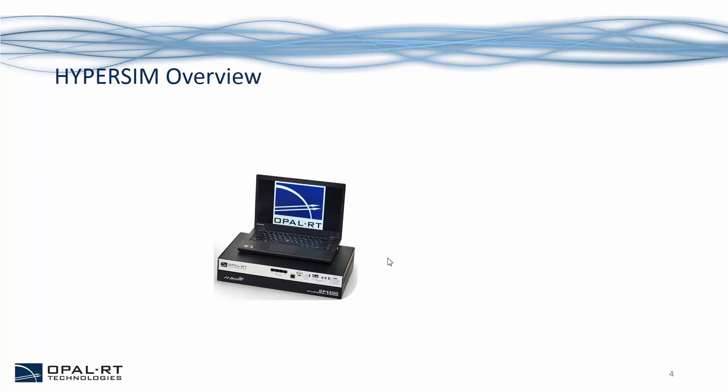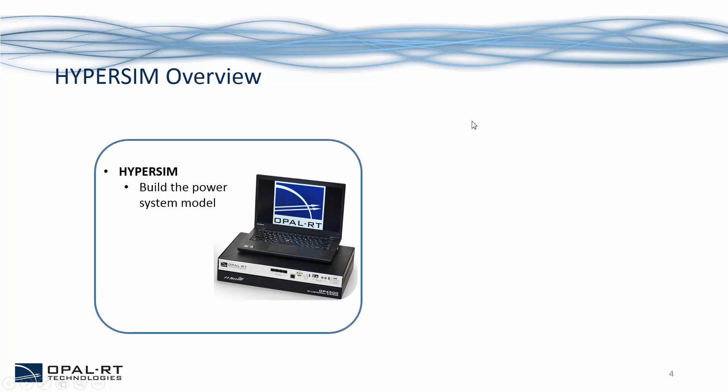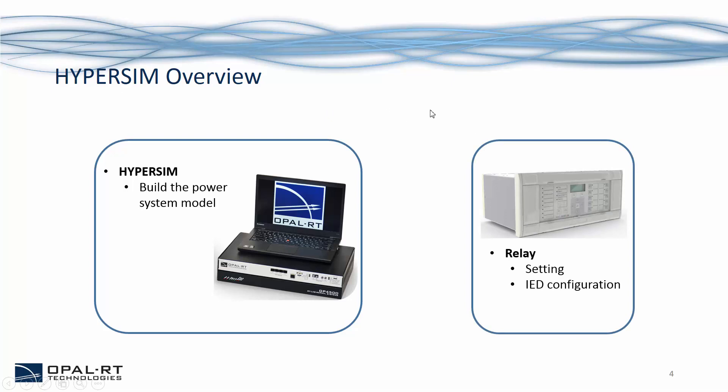Following the model-based design and testing methodology, the first step is collecting the system parameters and building a power system model in the simulation environment. Then, based on the application and the device under test, we will need to configure the IED. For example, if it is a protective relay, we will need to define a protection scheme to be tested. And if it is IEC 61850 compatible, we will also need to carry out engineering work for the IEC 61850 configuration.